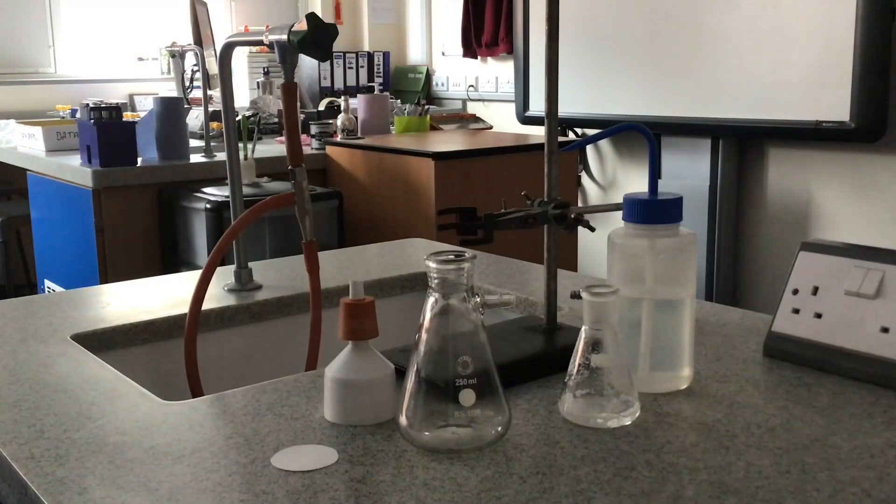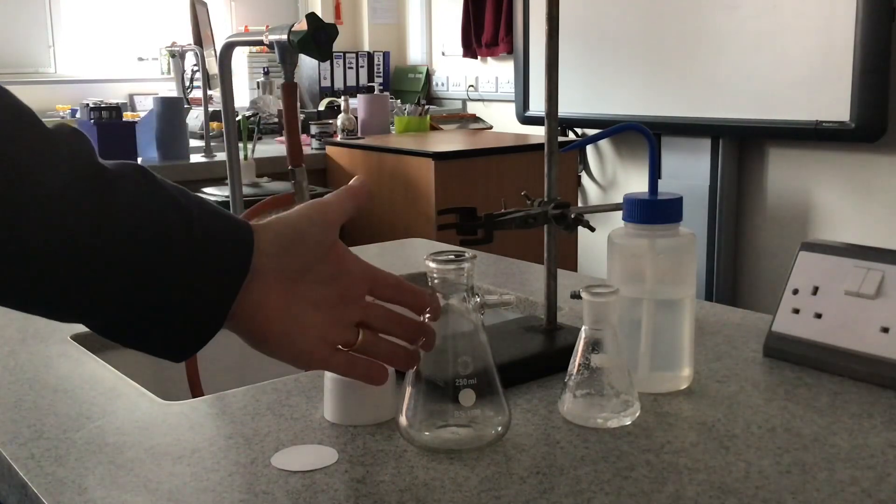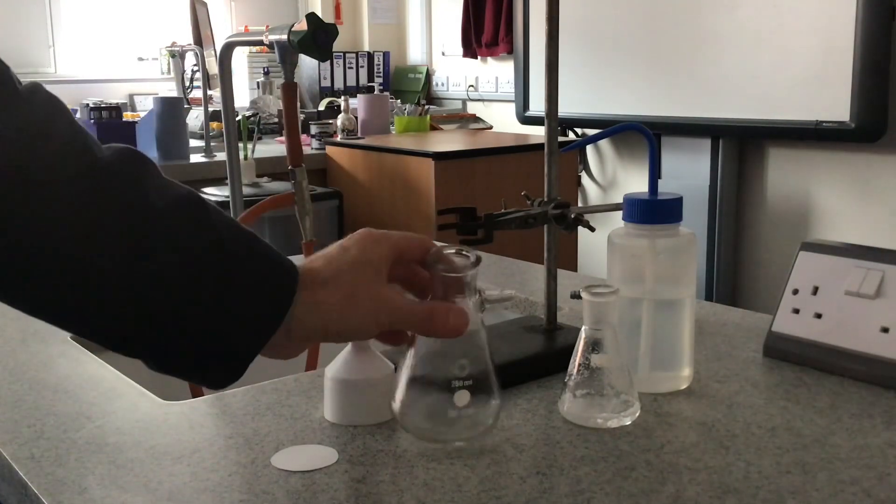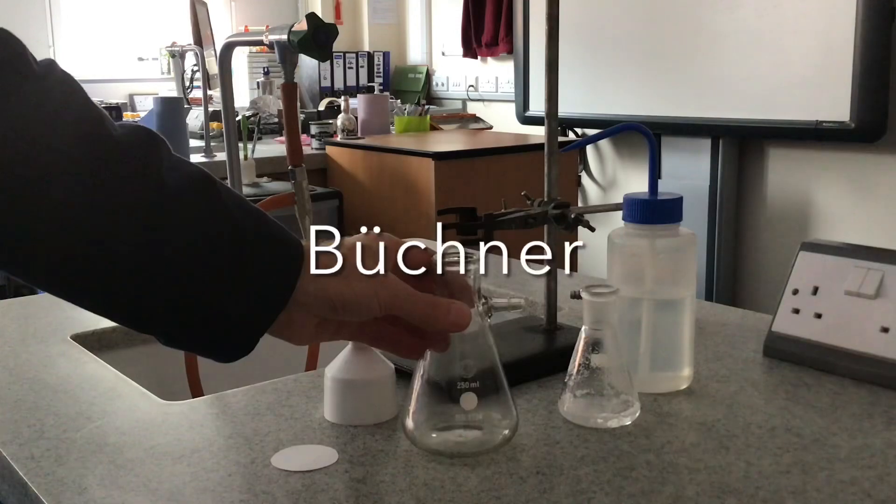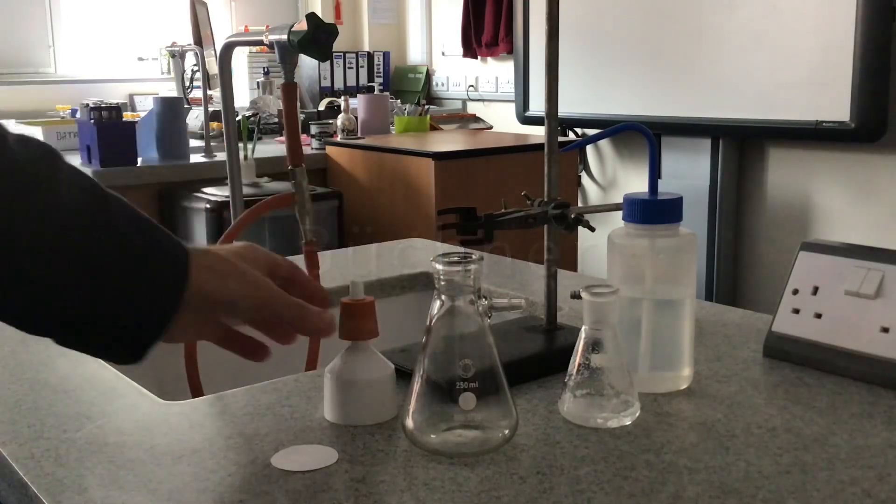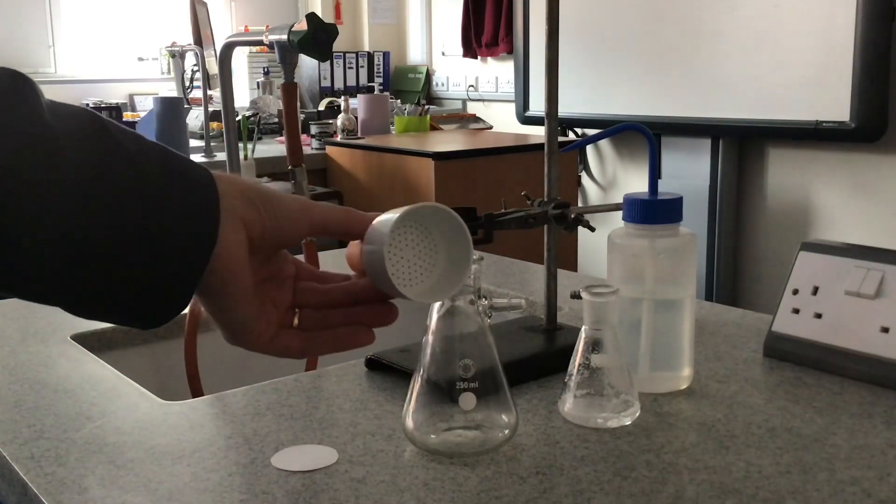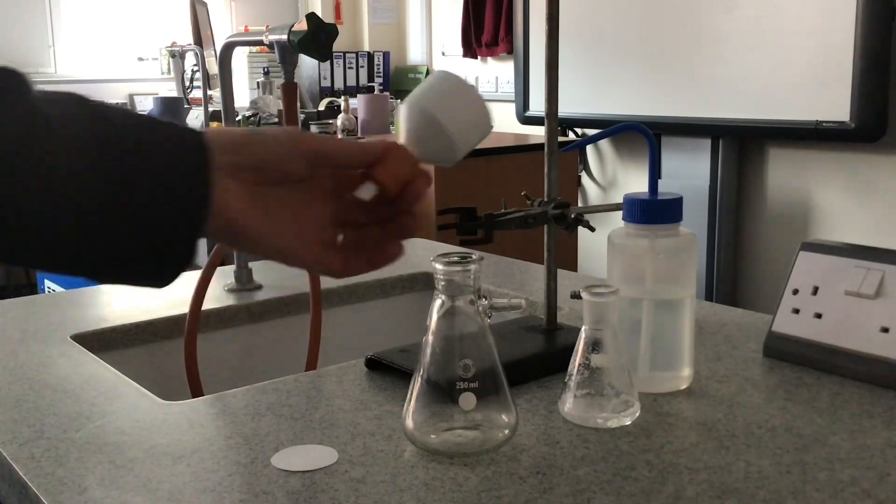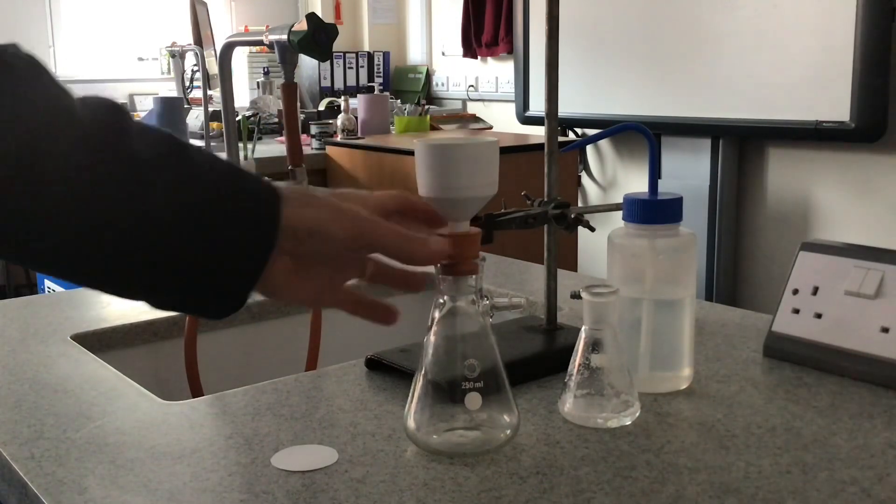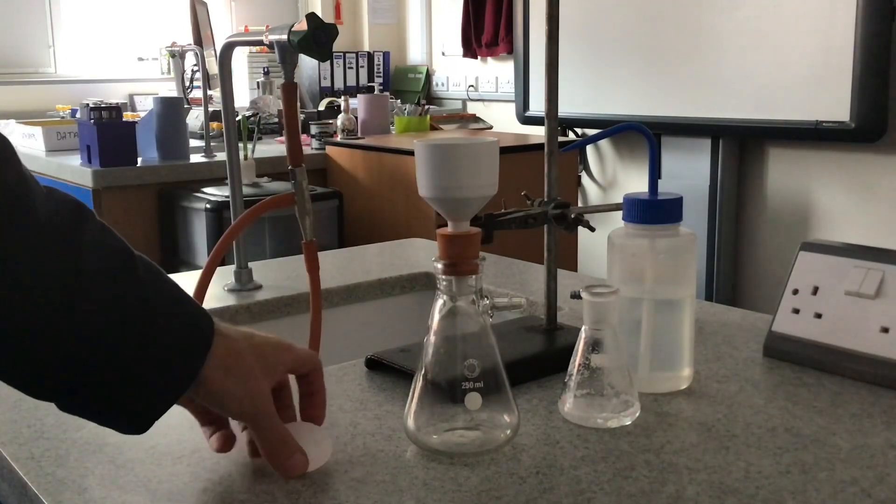In terms of equipment, we've got this conical flask here with a side arm. It's made from very thick glass. This is called a Buchner flask. We've got this filter funnel here, this is called a Buchner funnel. That's going to sit in there like that, and we've got the correct size.